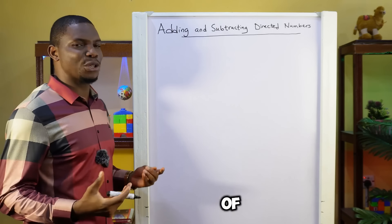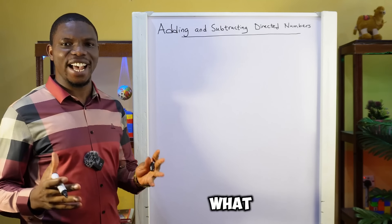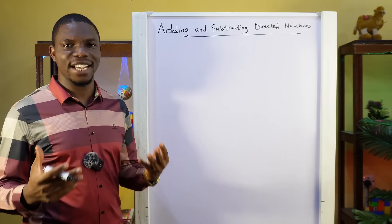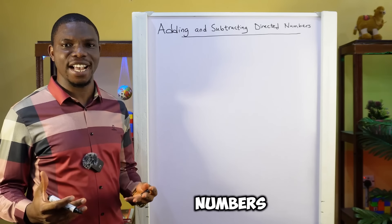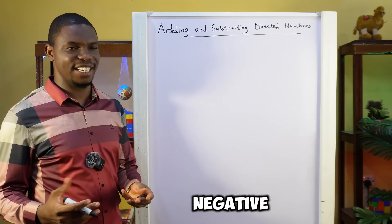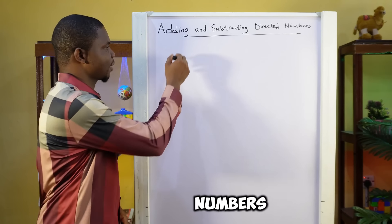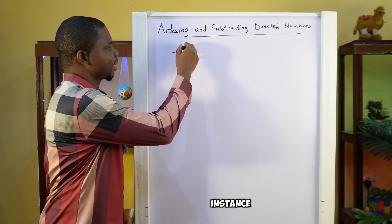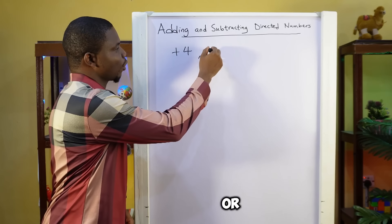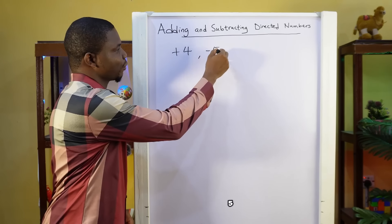First of all, you would ask: what are directed numbers? Directed numbers are positive and negative numbers. For instance, plus 4 or minus 5.